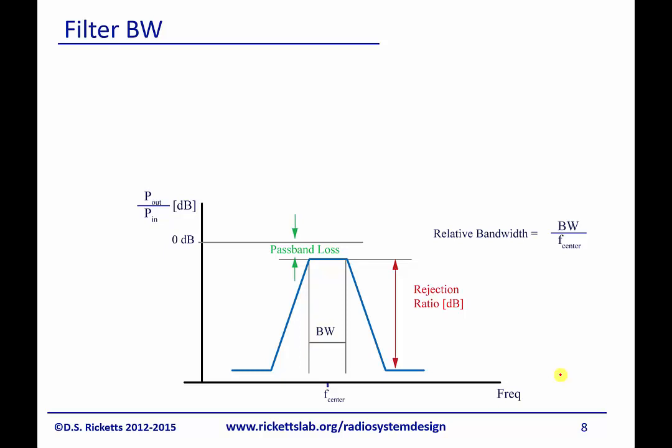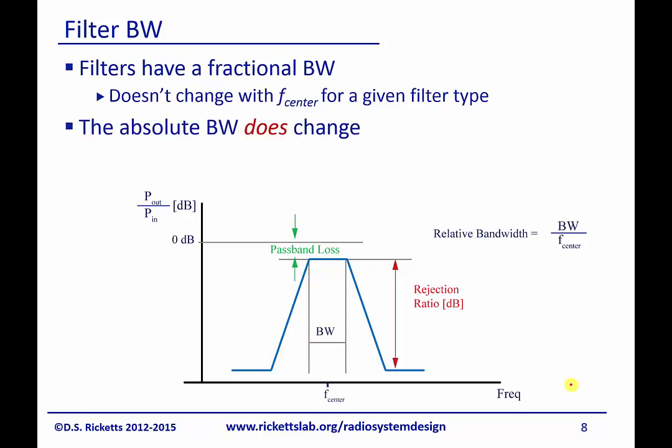I want to remind you about an aspect of filters that may not be immediately intuitive. All filters have a fractional bandwidth, and this fractional bandwidth is characteristic of the filter type — whether built from inductors and capacitors or surface acoustic waves. Whether you build it at 1 GHz or 10 GHz, the fractional bandwidth is typically the same, so the relative bandwidth stays constant and doesn't change much with center frequency. However, the absolute bandwidth does change.